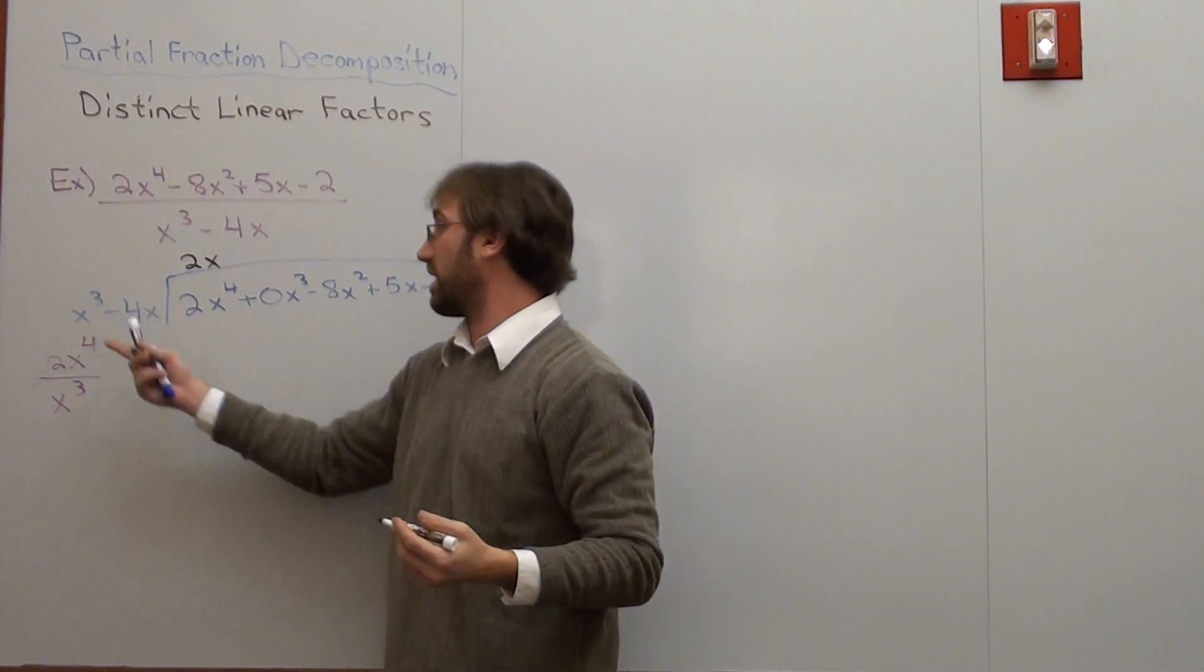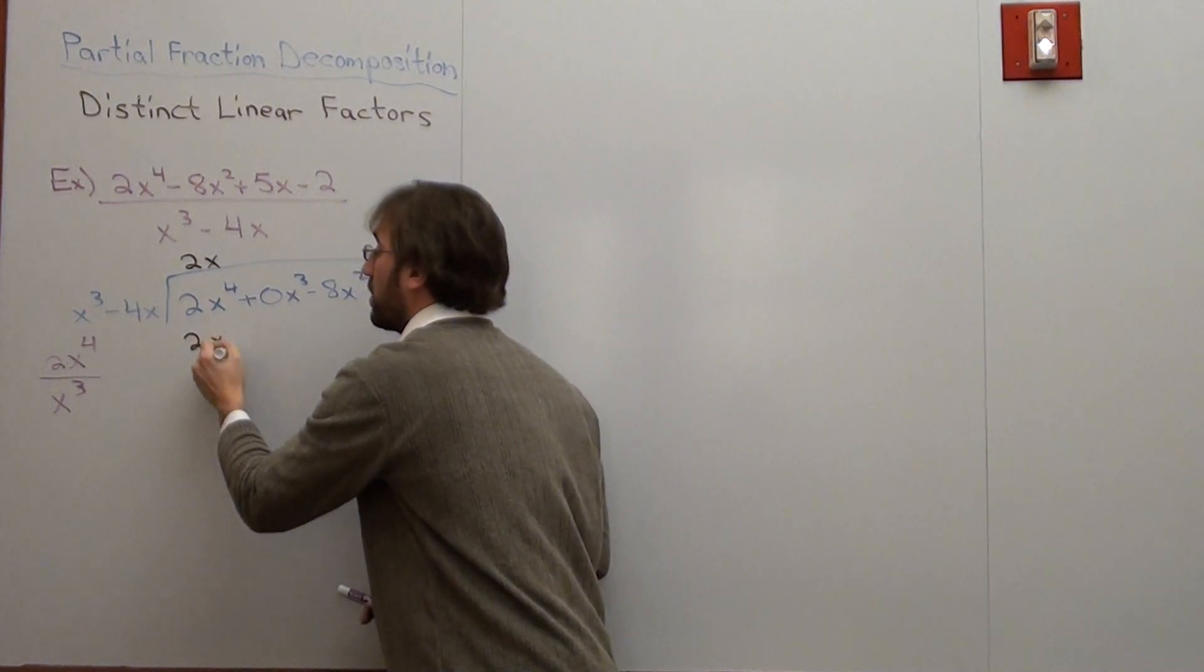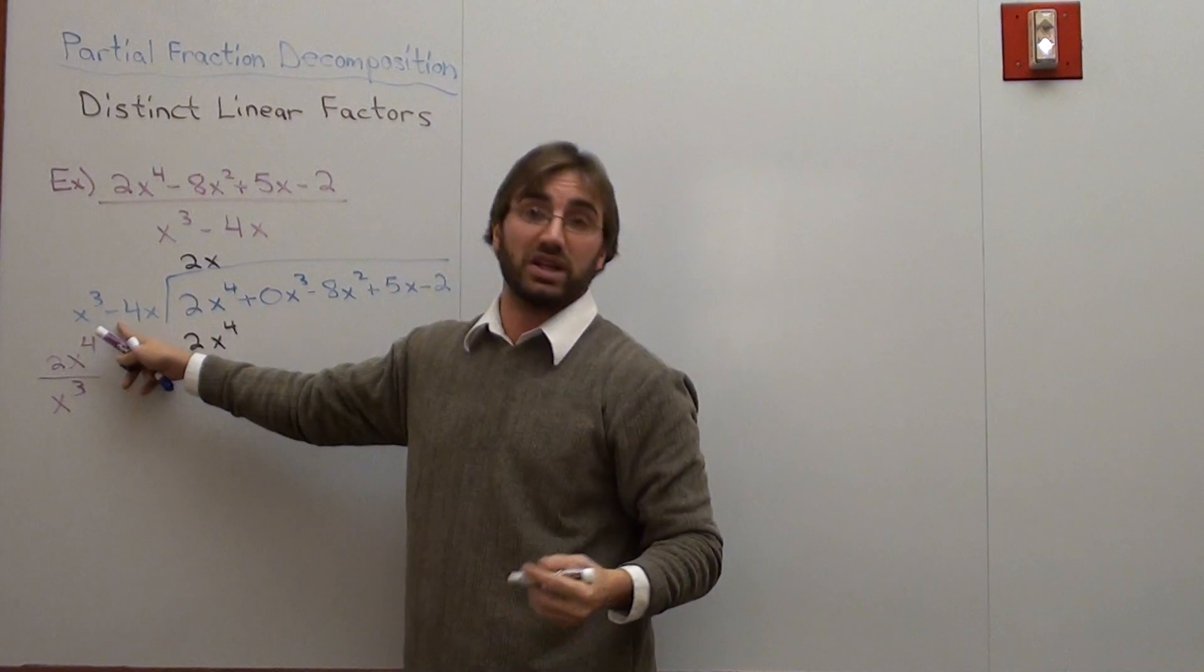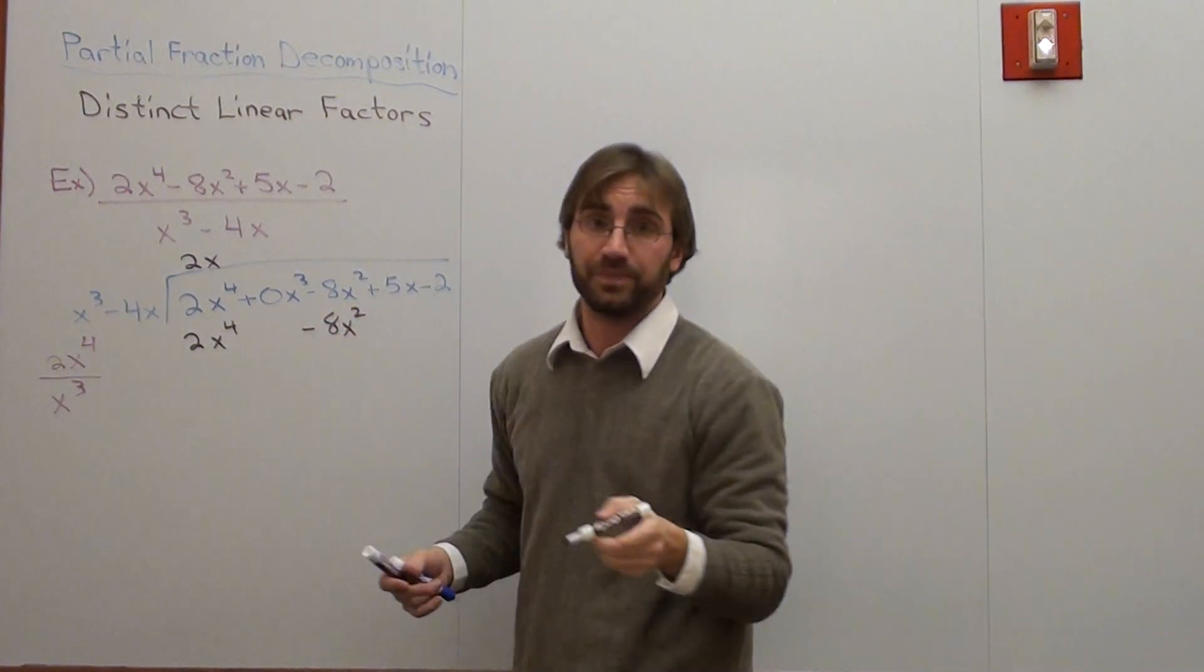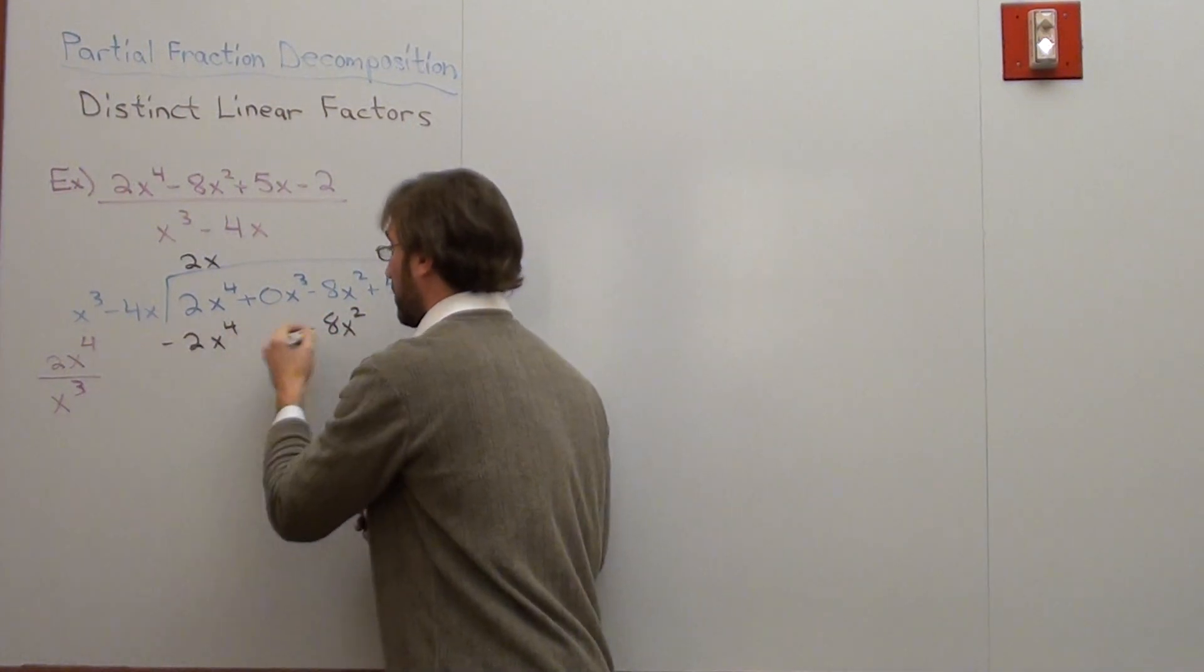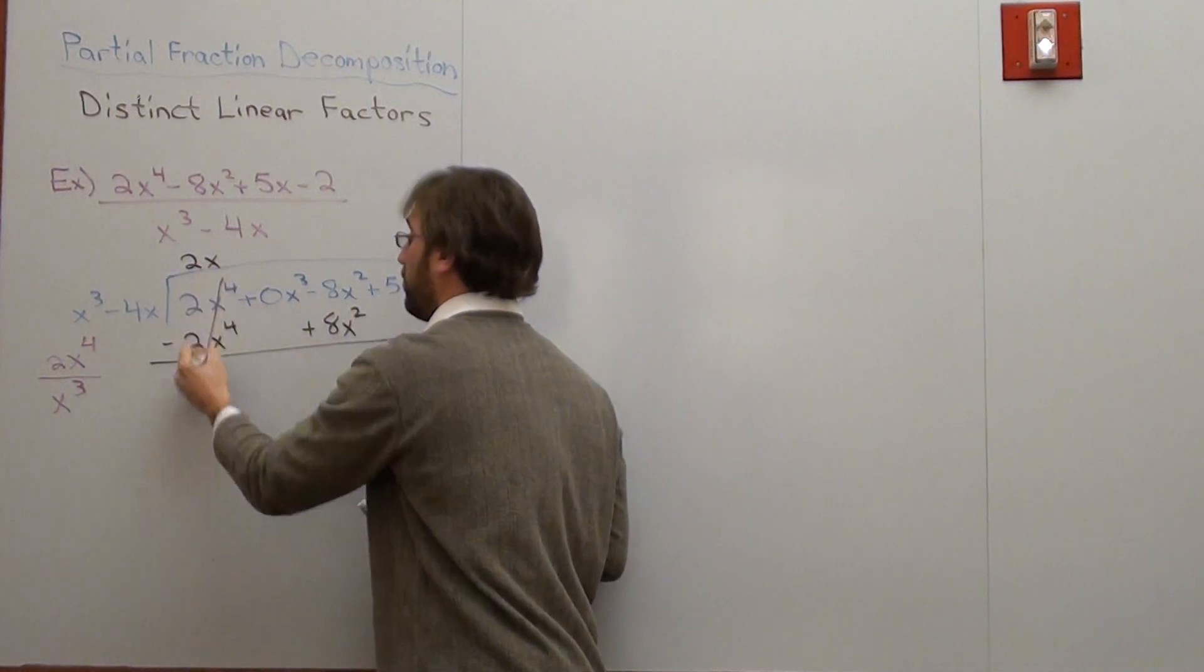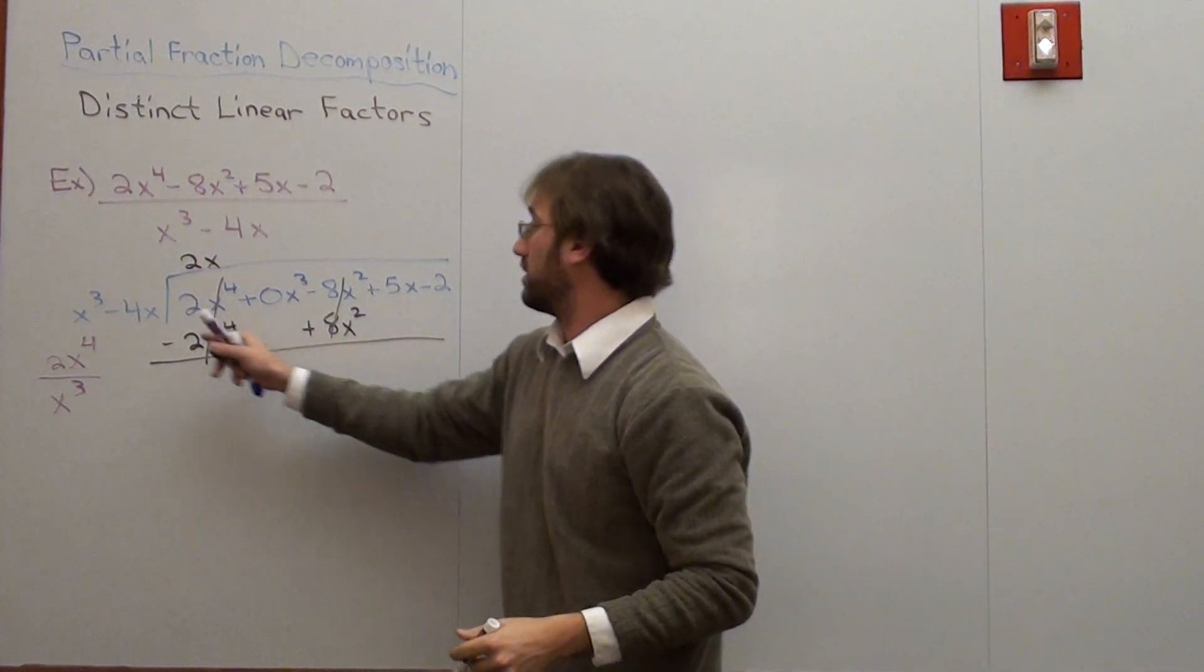When we do that, 2x times x cubed is 2x to the fourth, and 2x times negative 4x is negative 8x squared. We're going to go ahead and change the sign just like we would on a regular long division problem.